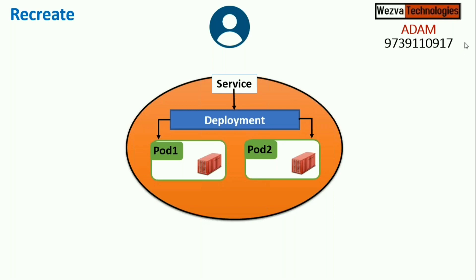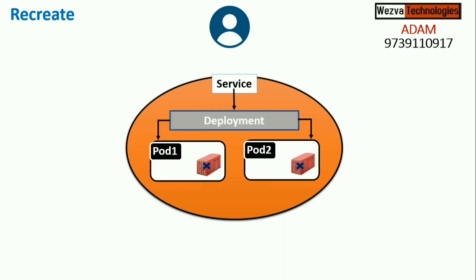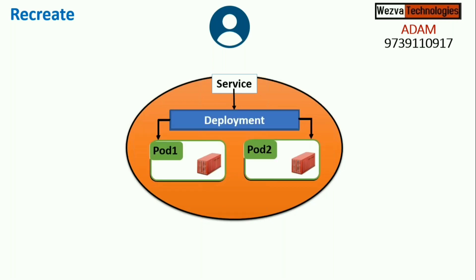Let's say there is a build called build 100 running. Now, in recreate, suppose I want to replace these two replicas with a new build image called build 200 and have two new containers based on that. In a recreate method, when you make changes in your YAML manifest file and say kubectl apply, first the existing pods will be terminated.